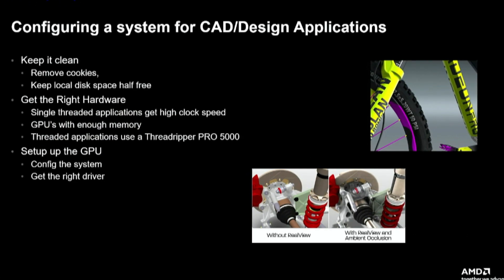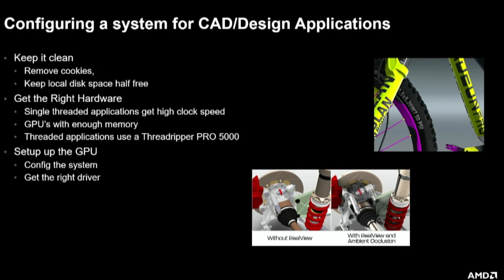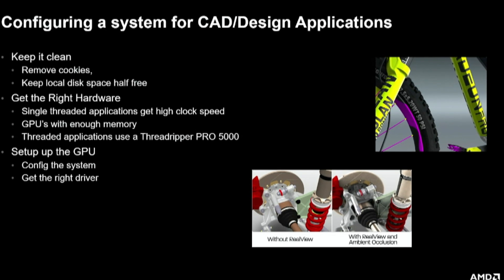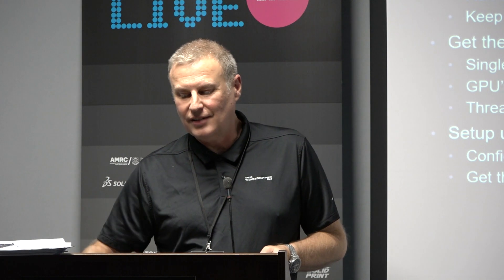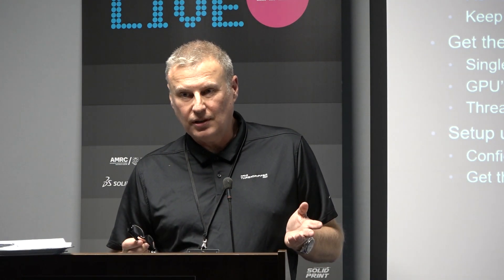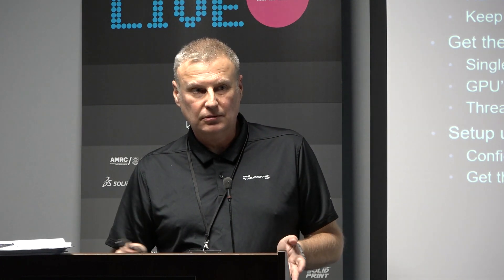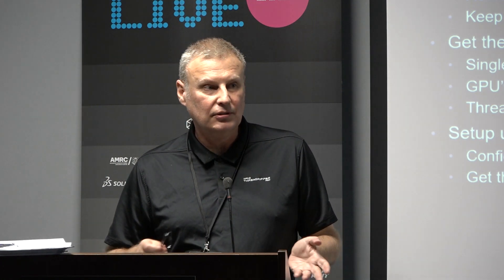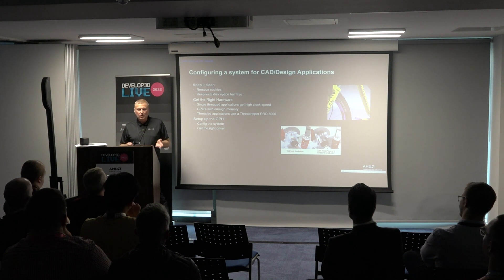We're on the stand there. To summarise: keep it clean, remove all the unnecessary stuff. Make sure you don't have little pop-ups interrupting you. Get the right hardware — for single-threaded apps you want a high clock speed. GPUs need enough memory — there's a four gigabyte minimum for SolidWorks to run in fast mode. If you have lots of threaded applications, look at Threadripper Pro. Configure the GPU properly, and get the latest driver. That's it, really. Thank you.